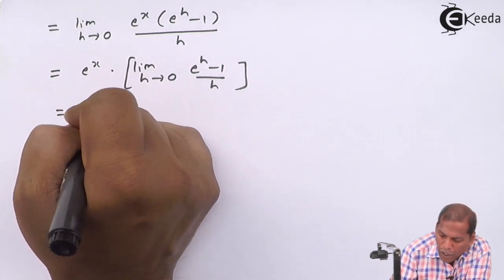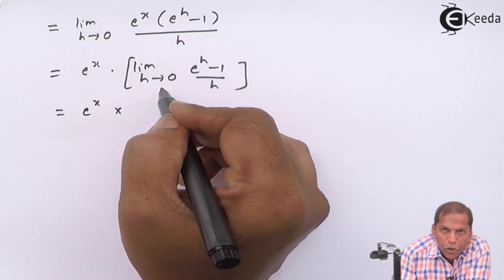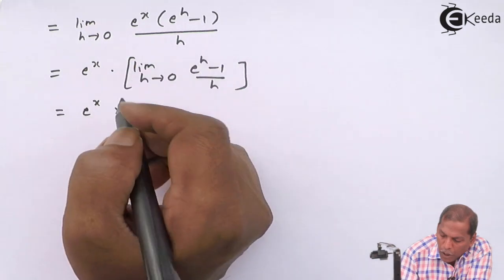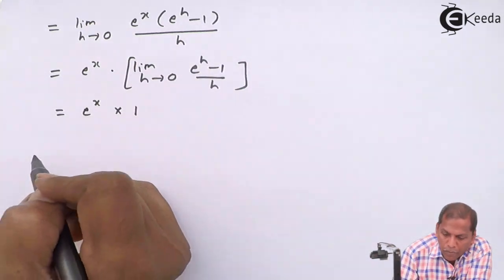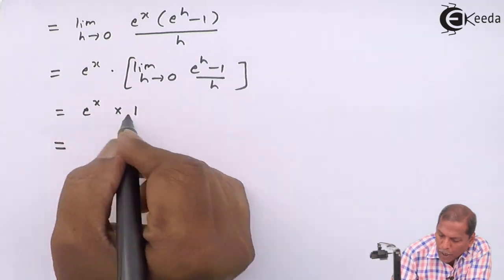So that limit gives us one, so that equals e raise x into one.